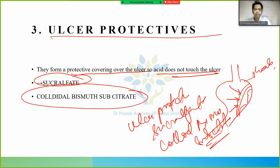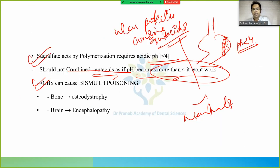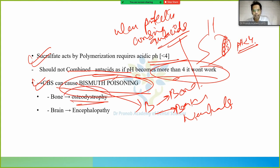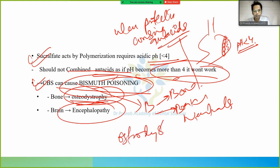Colloidal bismuth subcitrate (CBS) is an ulcer protective. Bismuth poisoning causes two side effects — both starting with 'B' like bismuth: osteodystrophy in bone, and encephalopathy in the brain.